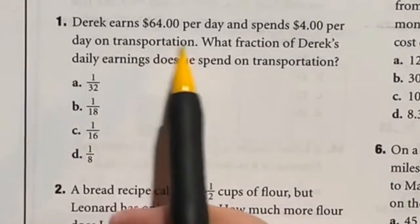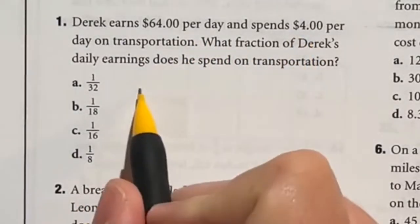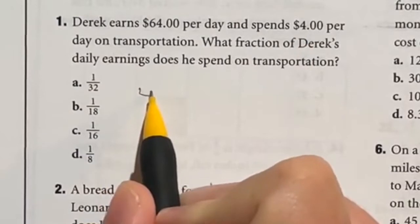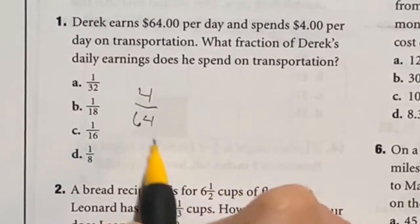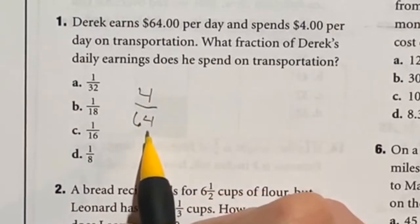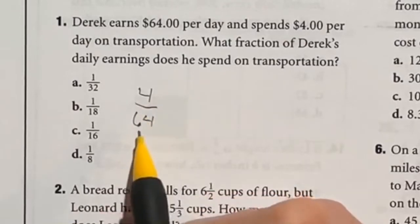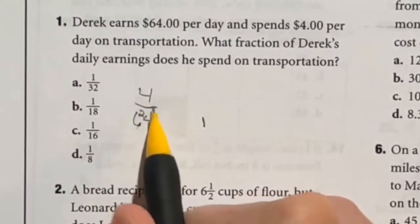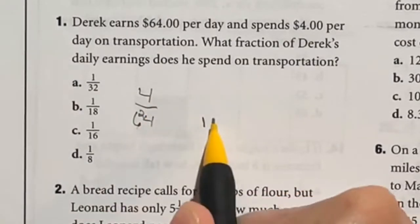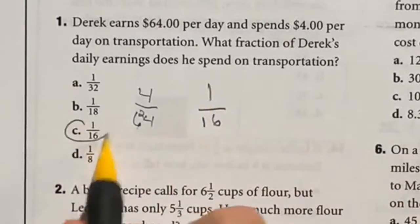So Derek makes $64 per day, but spends 4 of that on transportation. They want to know what fraction of his total pay does he spend on transportation, which would be 4 over 64. Now we do have to reduce this fraction and 4 does go into 64 fairly easily. So 64 divided by 4, well 4 goes into 6 one time with a 2 remainder, and then 4 goes into 24 six times. So our final answer here is actually 1 over 16, which is C.